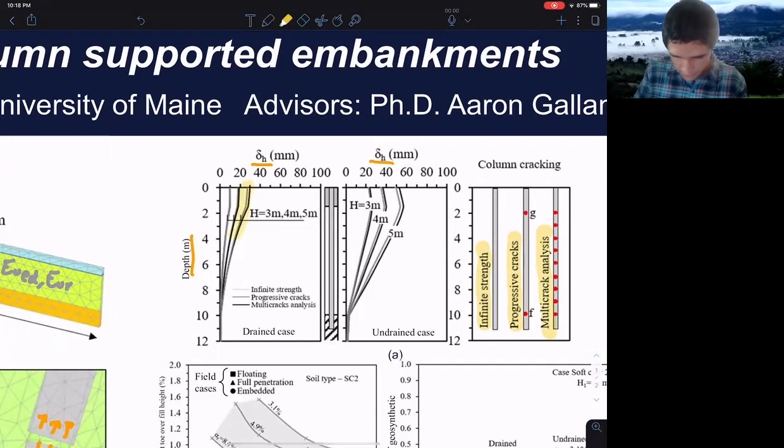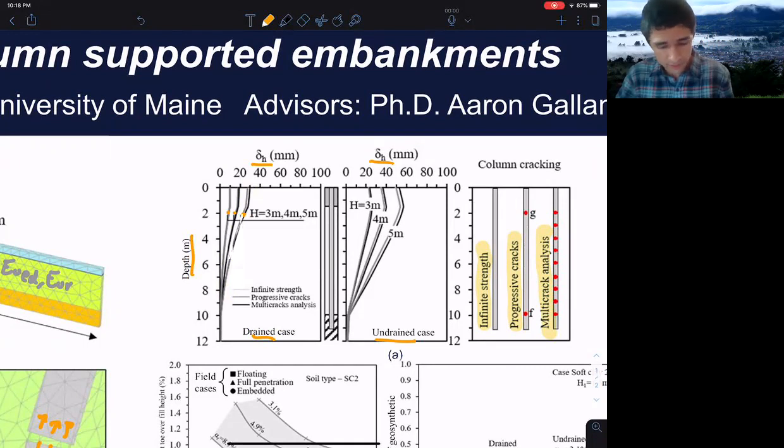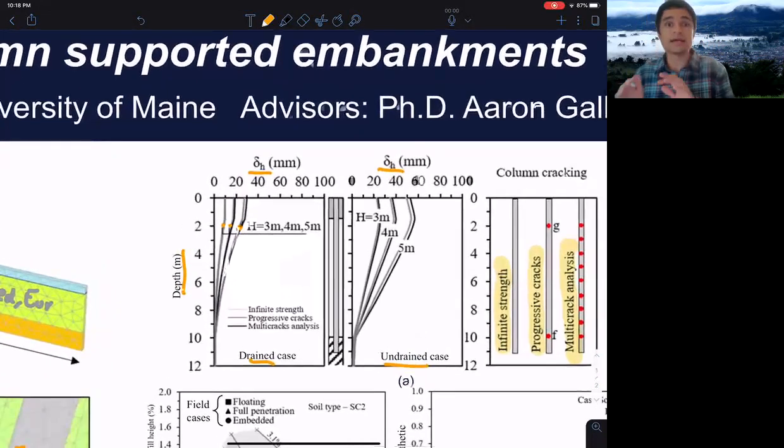As you can see, there are no appreciable differences. This is for fill heights of three meters, four meters, and five meters, both drained and undrained. It tells us that the fracture of the column doesn't have an appreciable influence on the lateral response. One of the conclusions is that the reason is that the soil is putting a lot of passive resistance to restrain the movement.